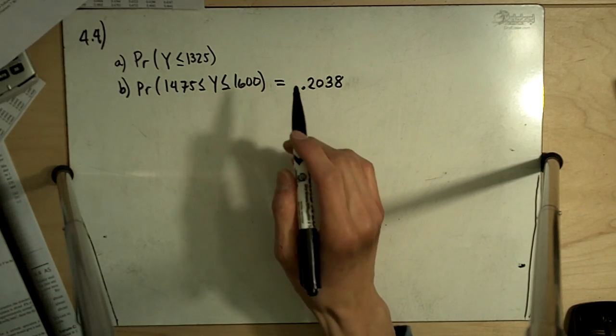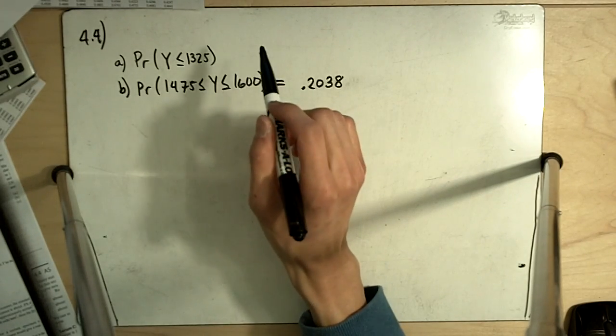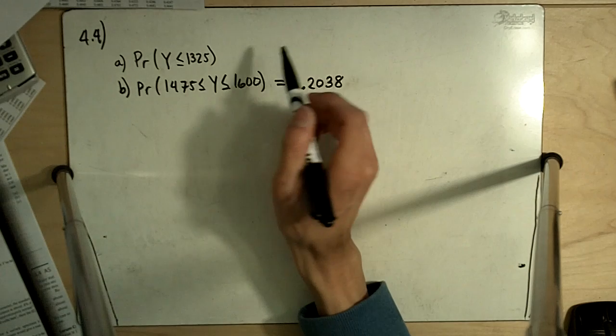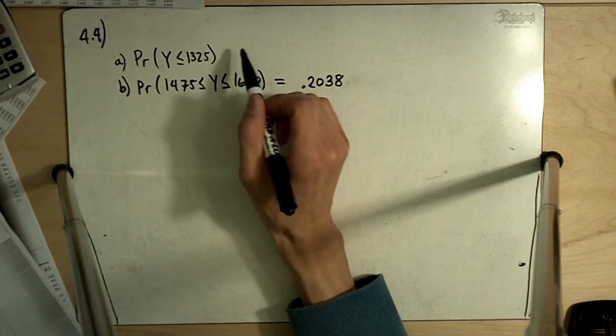Part A is very similar to part C, except part C asked for 1325 or more, and here we're asking for 1325 or less.